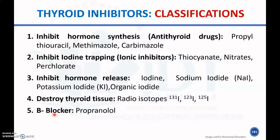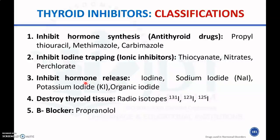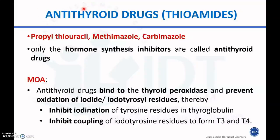Thyroid inhibitors are classified into five groups: first, drugs that inhibit hormone synthesis (anti-thyroid drugs) like propylthiouracil, methimazole, and carbimazole; second, drugs that inhibit iodine trapping (ionic inhibitors) like thiocyanate, nitrate, and perchlorate; third, drugs that inhibit hormone release like iodine, sodium iodate, and potassium iodate and organic iodates; fourth, drugs that destroy thyroid tissue like radioactive iodine — I-131, I-123, and I-125; and fifth, beta-blockers like propranolol.